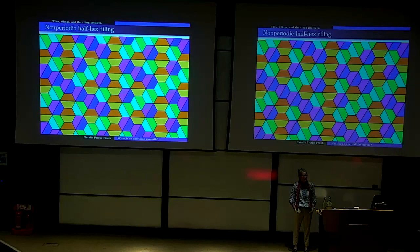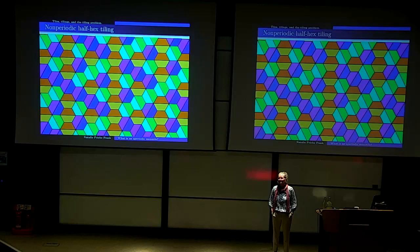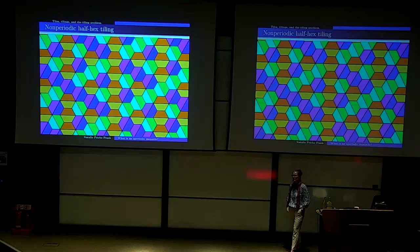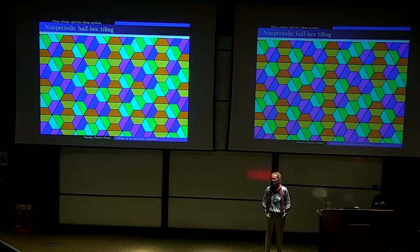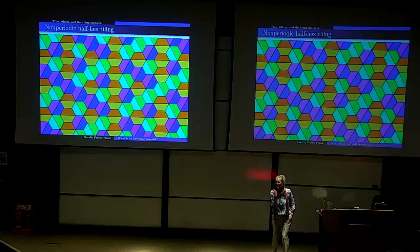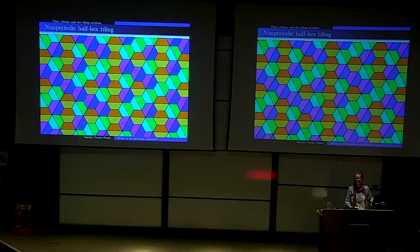Audience question: if you have a tiling you can't translate onto itself, but you can rotate it 180 degrees onto itself, is that still aperiodic? It depends on the tiling. Some periodic tilings will have rotational symmetry like that. We would call such a tiling non-periodic, and maybe not aperiodic — I'm going to use 'aperiodic' in a slightly more restricted sense. Other symmetries can happen even in the absence of periodicity.